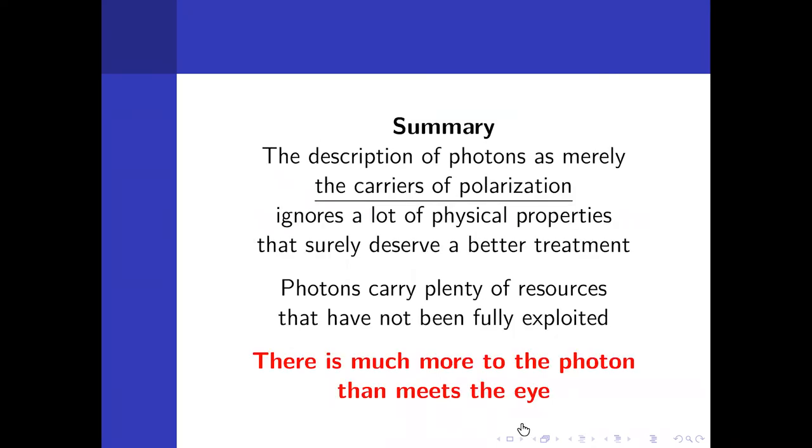So now it's time for the summary. The description of photons as merely the carriers of polarization is not right. It ignores a lot of properties, and we surely could do better than that. There's much more to the photon that meets the eye. One may even quote Einstein, that it's only a rascal that can claim that he understands what photons are. Maybe we are approaching this understanding, but at a very slow pace. Thank you very much.